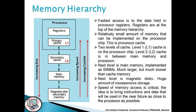The fastest access to data is via the processor registers. The registers are at the top of the memory hierarchy. There is a relatively small amount of memory that can be implemented on the processor chip, and this is the processor cache, which can be called the primary cache.